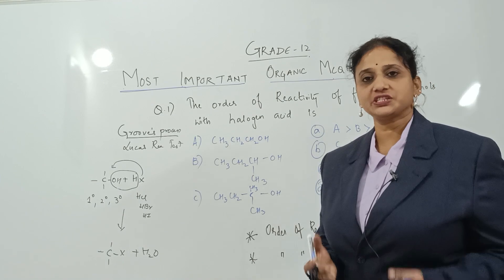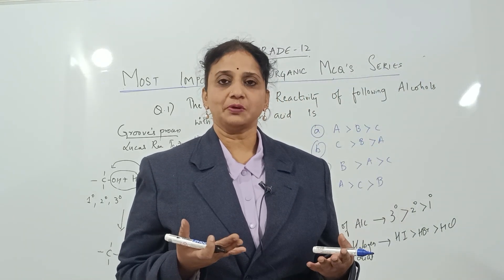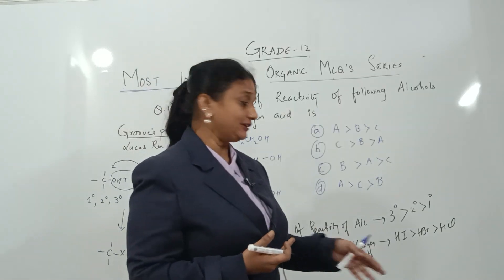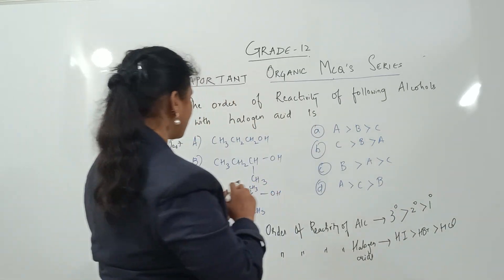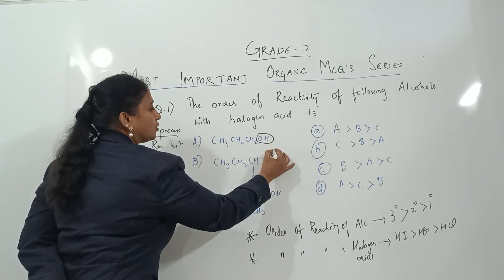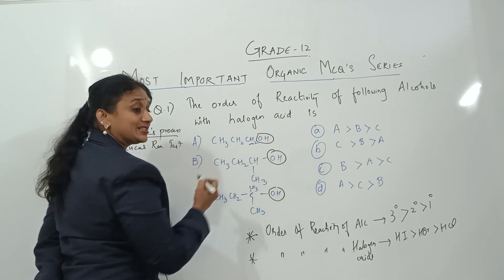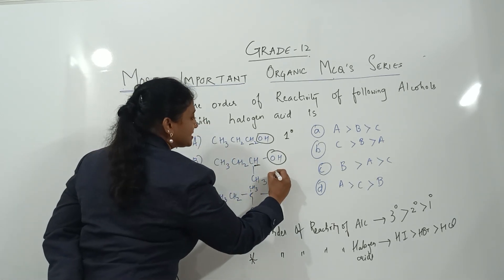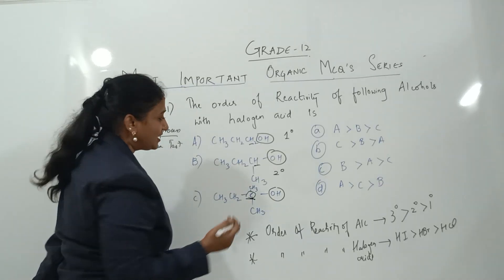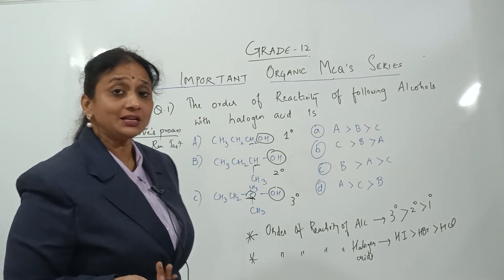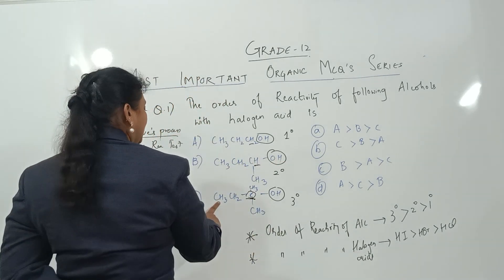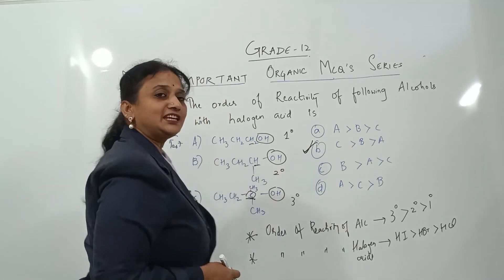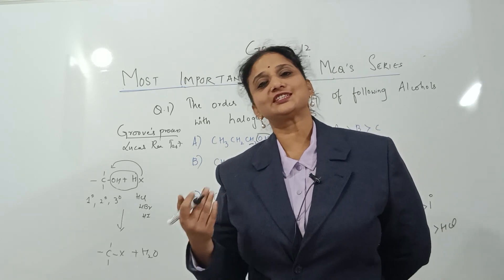So whenever a Lucas test question is given: tertiary is more stable, halogen acid order is HI > HBr > HCl because bond length increases making it easier to cleave. Now in this question: the OH attached to a carbon with two hydrogens is primary; with one hydrogen is secondary; with no hydrogens is tertiary. So the correct order is C > B > A — tertiary > secondary > primary.